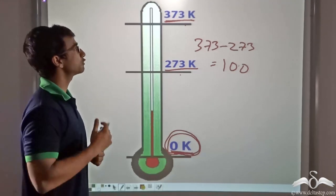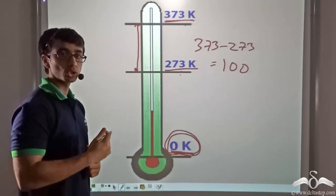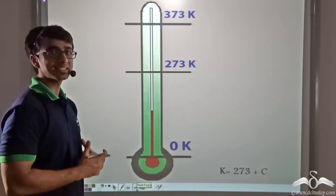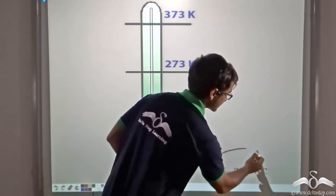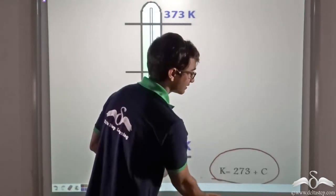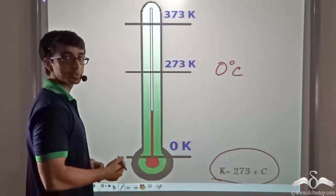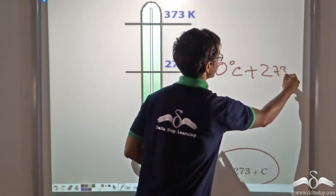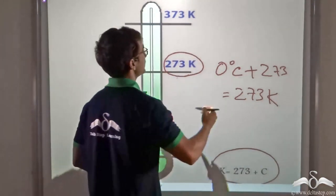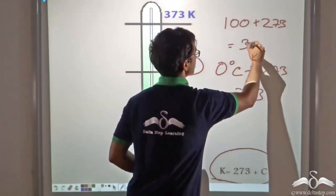The total number of parts between 273 Kelvin and 373 Kelvin is 100, just as in the Celsius scale between 0 degrees and 100 degrees Celsius there are also 100 equal parts. Thus we can simply find the relation between Kelvin and Celsius: K = 273 + C. So the ice point of 0 degrees Celsius plus 273 gives 273 Kelvin, and the steam point of 100 degrees Celsius plus 273 gives 373 Kelvin.